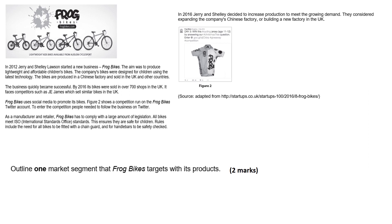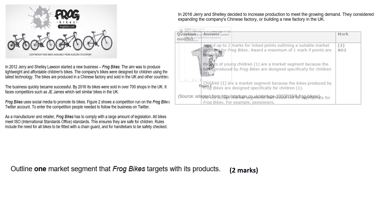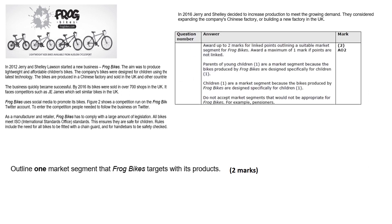You can pause this video and give the question a go. The mark scheme — it's a two mark outline question. You might have written that parents of young children are a market segment because the bikes produced by Frog Bikes are designed specifically for children. Or that children themselves are the market segment for the same reason. The mark scheme would not accept market segments that are not appropriate for Frog Bikes, for example, pensioners.